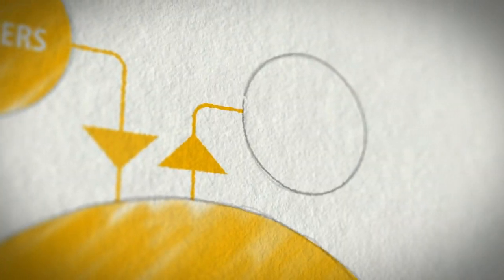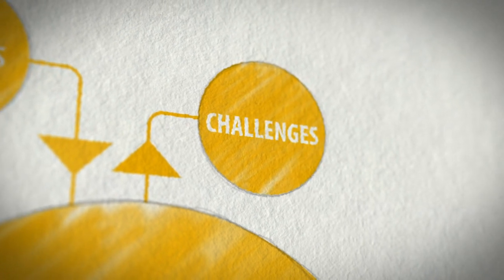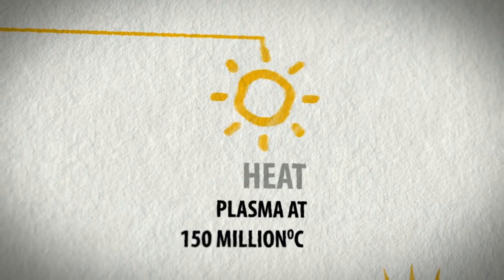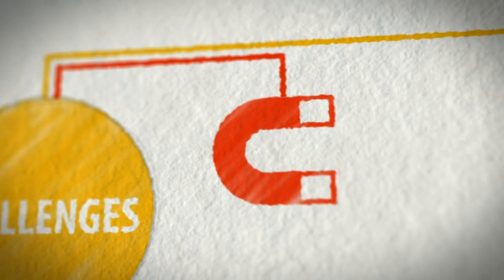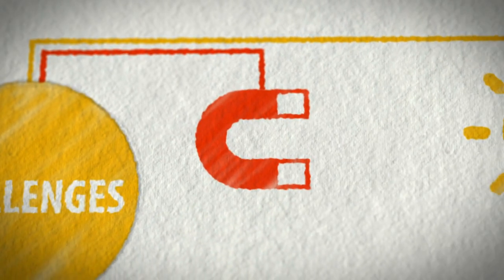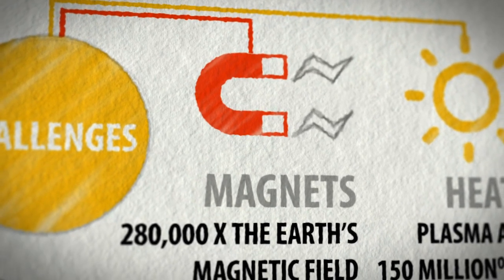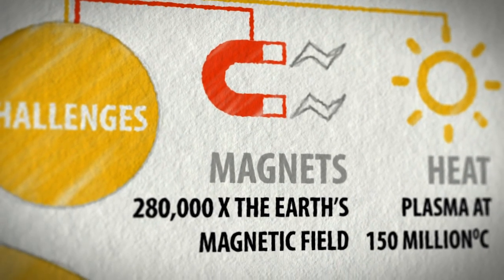ETA stands for cutting-edge technology and innovation. A whole army of high-energy heating systems will fire the plasma up to 150 million degrees Celsius. Super-sized superconducting magnets, some producing magnetic fields that are 280,000 times stronger than that of Earth, will confine the hot plasma inside the torus.